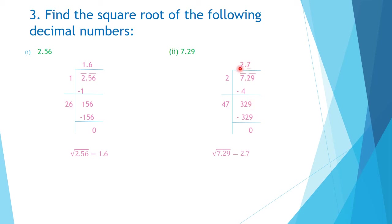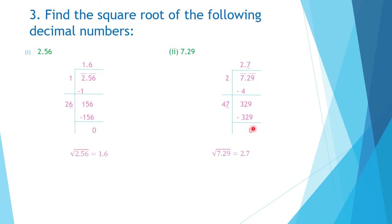Double the quotient digit 2 to get 4, written on the left. Now find the digit whose placement gives a units digit of 9 in the product. Options are 3 (3×3=9) or 7 (7×7=49). Trying 43 into 3 does not give 329, but 47 into 7 gives 329. So the correct digit is 7; we write 329 and subtract to get 0. The square root of 7.29 is 2.7.